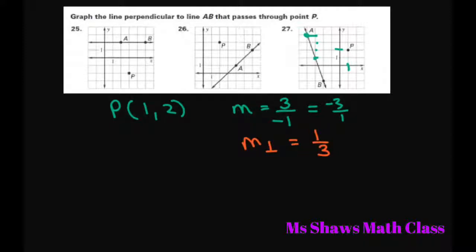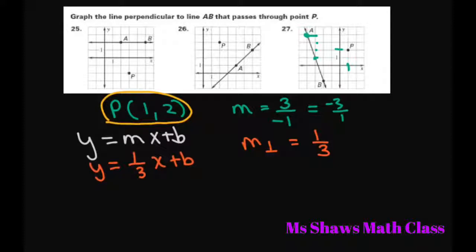So we're going to write our equation. Y equals mx plus b. Plug in your slope. Your new slope is 1/3. And then we're going to plug in these points because these lie on this line. So y is 2. X is 1.